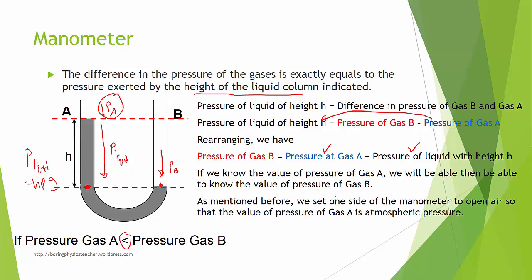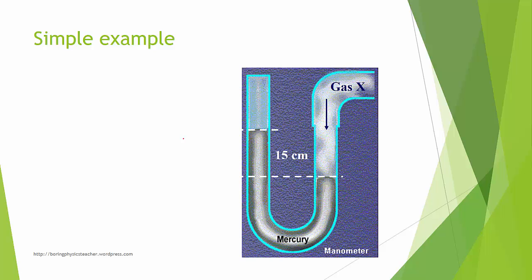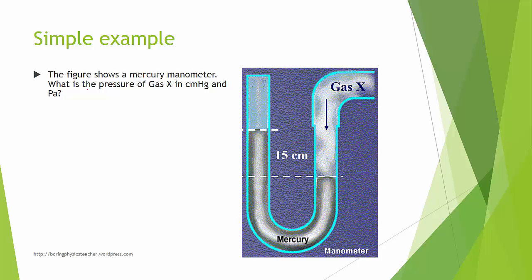As mentioned, we usually set one side of the manometer open to air so the pressure of gas A is atmospheric pressure, which is generally 76 cm Hg. Here is a simple example: the figure shows a mercury manometer, and we want to find the pressure of gas X in centimeters Hg and in Pascal, assuming atmospheric pressure is 76 cm Hg.